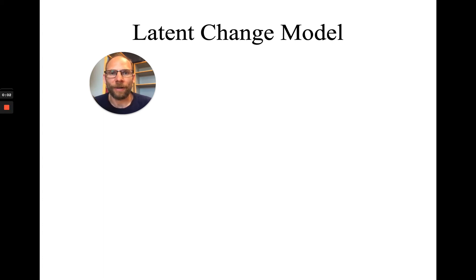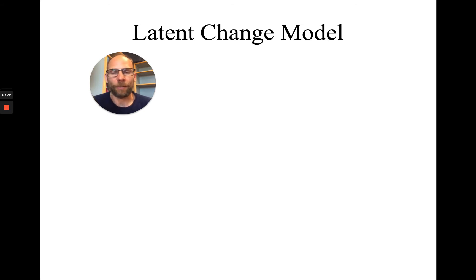In this presentation, I want to talk some more about the latent change score model. In a previous video, I introduced the idea of reformulating a longitudinal confirmatory factor model into a latent change score model. If you're not yet familiar with this idea, then I suggest you take a look at that previous video first, where I explained how that works and provided some references in the description. Here, I want to follow up on this latent change score model and show you how you can make it a little bit easier to specify in structural equation modeling software than the version I presented initially.